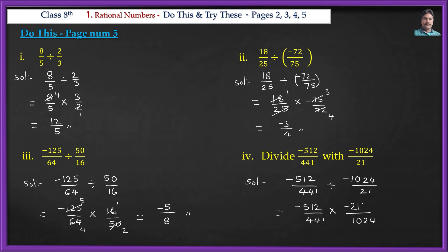Cancel using factor 7: 21 = 7×3, 42 = 7×6, and 441 = 21×21. Cancel using factor 3: 3×1=3, 3×2=6, 3×1=3, and 21×21=441. Cancel 512 and 1024: 512×2=1024, so 512 cancels to give 1.